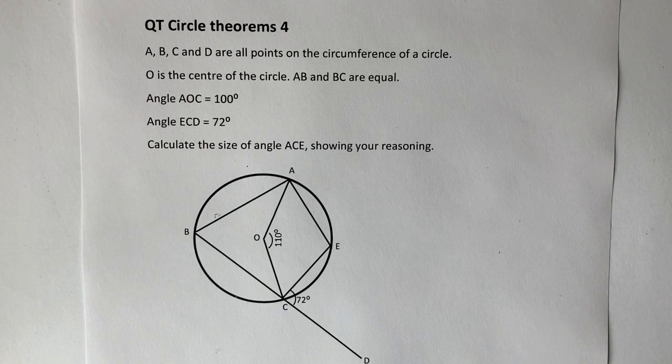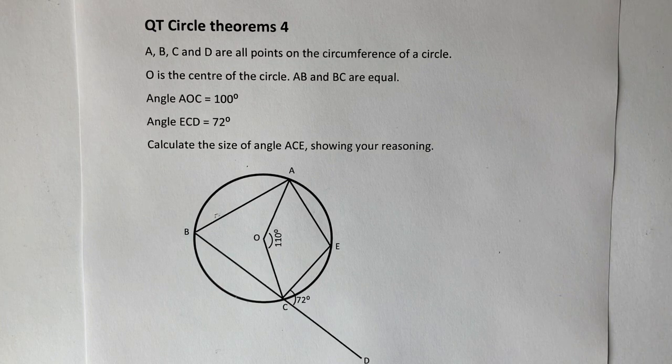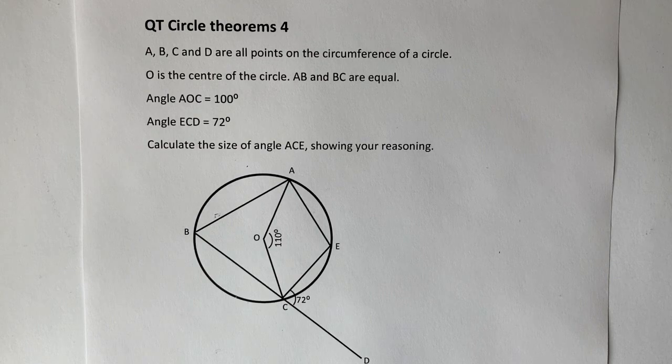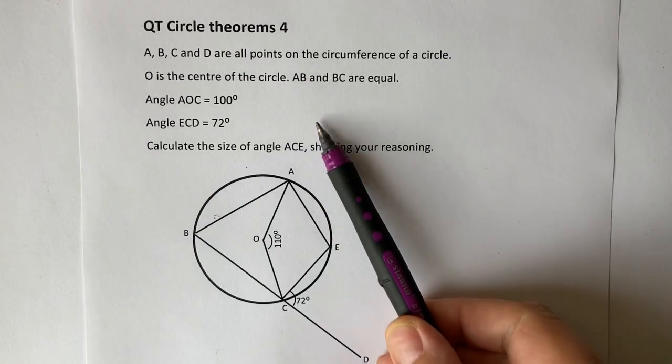Now, with this type of question, you just need to really make sure that you're reading through the question thoroughly because otherwise you might miss things. For instance, AB and BC are equal, which is this little bit here.